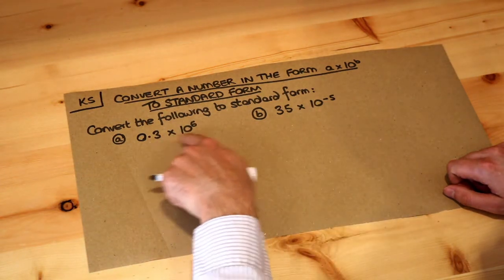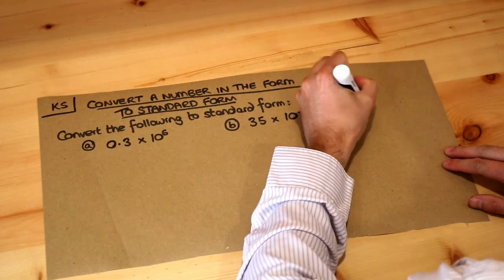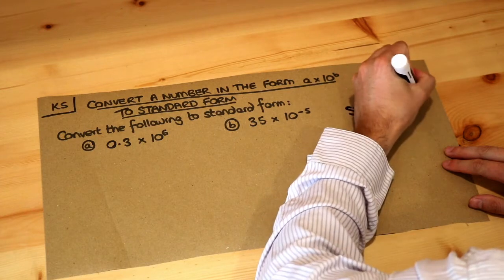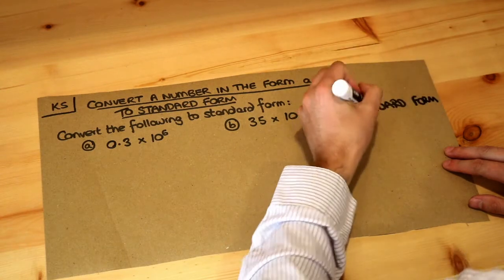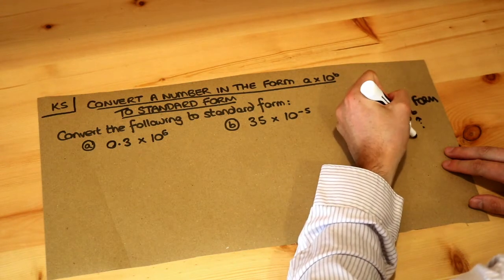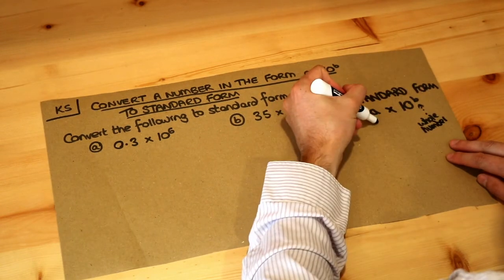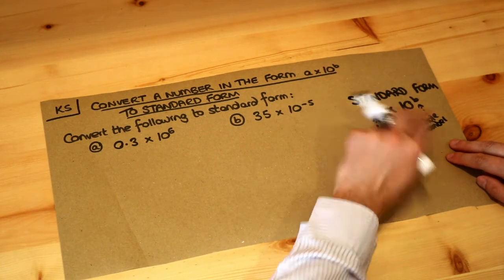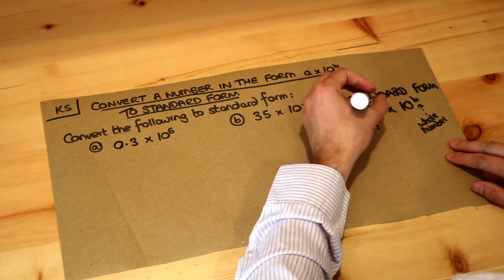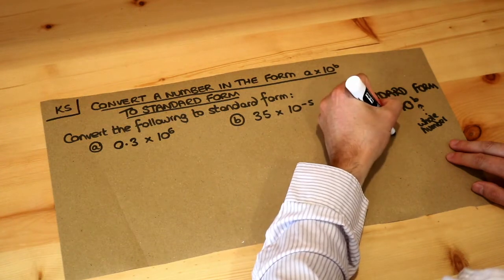Now these numbers are sort of almost in standard form, but there's something a bit wrong. Remember what standard form is: it's when we have a number times 10 to the power of a whole number, so B is a whole number — could be negative — so an integer. And then the restriction on the number at the start is it has to be between 1 and 10, excluding 10. So it's got to be at least 1, but less than 10.